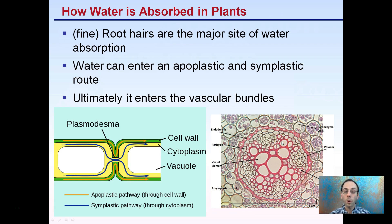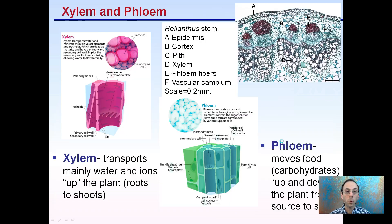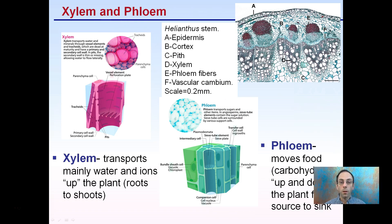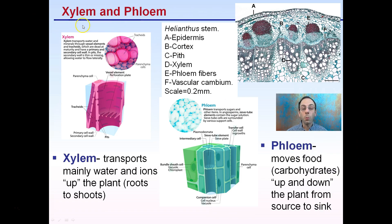Investigating these vascular bundles in a little more detail, we see there are two main types: what we call xylem and what we call phloem.